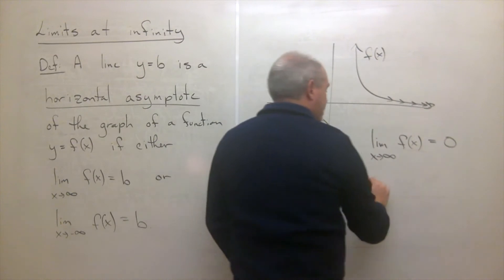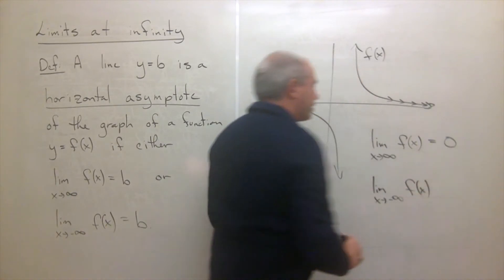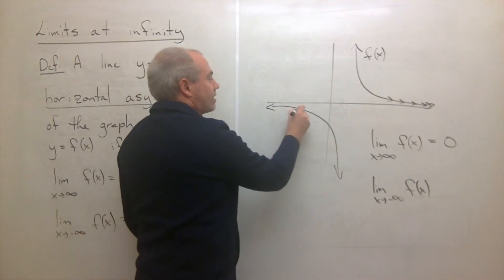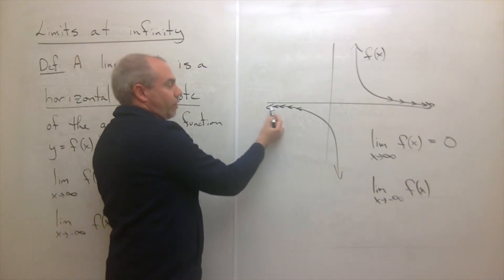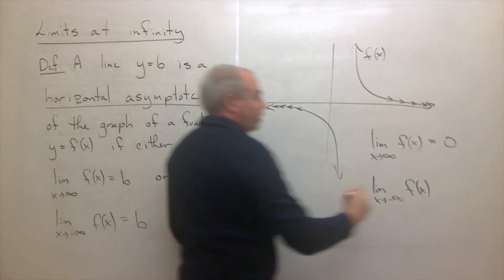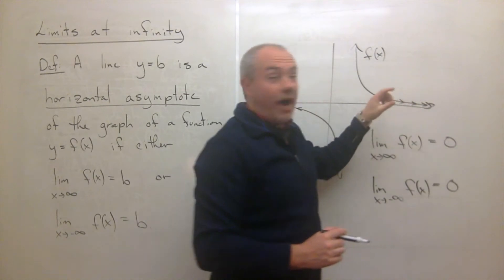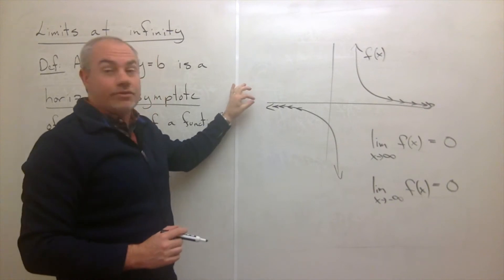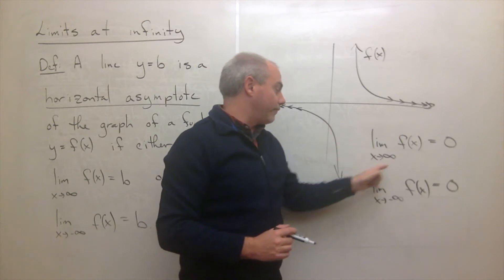In a similar way, I could ask what's the limit as x goes to negative infinity of f of x. All that means is: as the x values get more and more negative, is this getting close to a given value? And again, on this one, we're getting closer and closer to zero. So as x values get big, y values get small. As x values get very negative, y values get close to zero. So both of these limits would be zero as x goes to infinity and negative infinity.